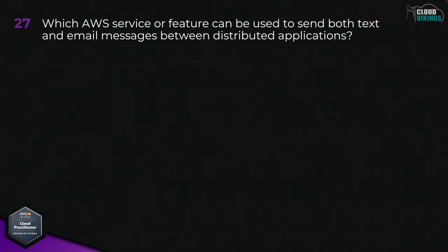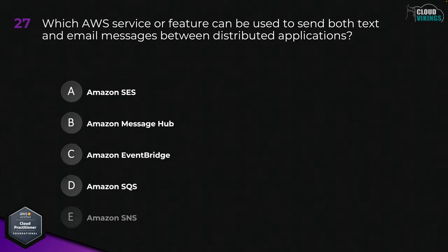Question twenty-seven: which AWS service or feature can be used to send both text and email messages between distributed applications? Options are: A, Amazon SES; B, Amazon Message Hub; C, Amazon EventBridge; D, Amazon SQS; or E, Amazon SNS. The correct answer is E, Amazon SNS.